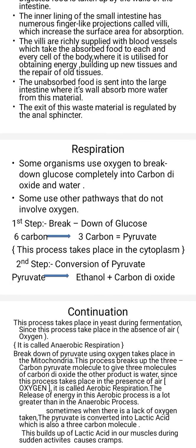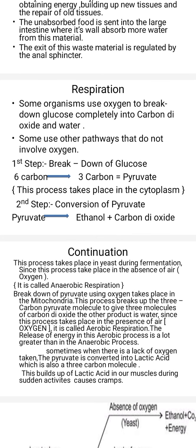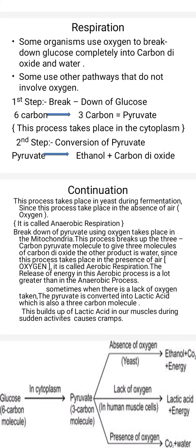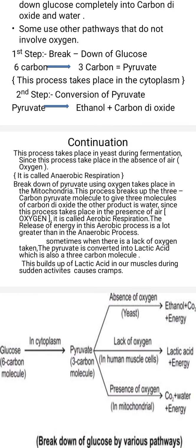Now we will see how respiration takes place. Some organisms use oxygen to break down glucose completely into carbon dioxide and water; some use other pathways that do not involve oxygen. The first step is the breakdown of glucose — the six-carbon molecule gives rise to three-carbon pyruvate, and this process takes place in the cytoplasm. In the second step, pyruvate gives rise to ethanol plus carbon dioxide. This process takes place in yeast during fermentation and, since it occurs in the absence of oxygen, it is called anaerobic respiration.